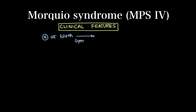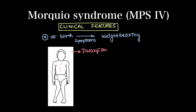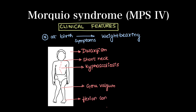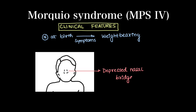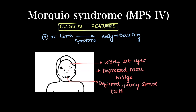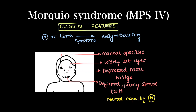Moving on to Morquio syndrome or mucopolysaccharidosis type 4. The child will be normal at birth and symptoms will start once weight bearing starts. There will be dwarfism, kyphoscoliotic defects, short neck, genu valgum, and flexor contractures. Facial features include depressed nasal bridge, widely set eyes, and deformed poorly spaced teeth. Corneal opacity may or may not be present, and mental capacity is normal in these children.